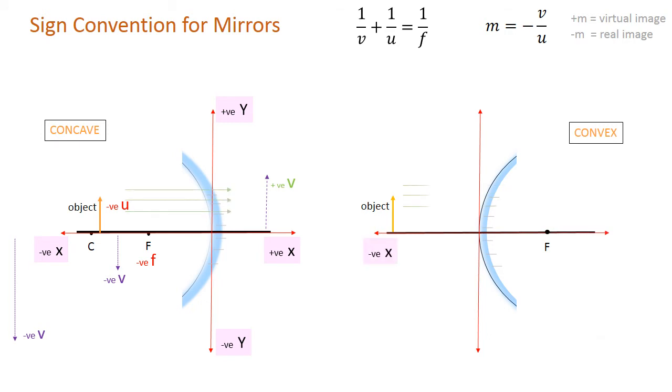The object is kept on the negative x-axis, however in this case the focal length is on the positive x-axis and gets a positive sign. The image in case of convex mirror is a virtual image and is formed on the positive x-axis and therefore gets a plus V sign.